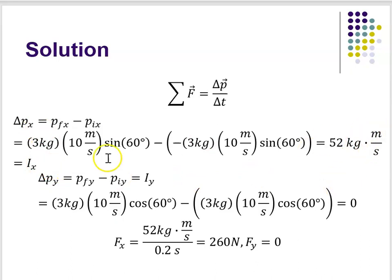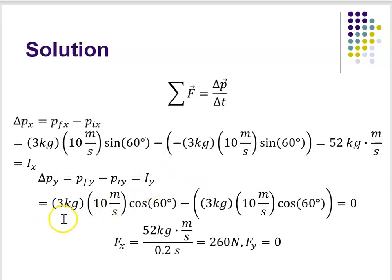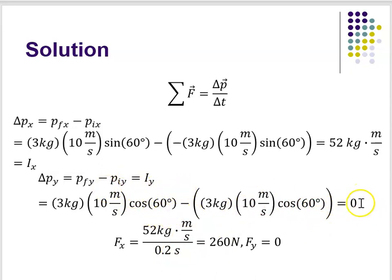Now the change in momentum in the y direction is p final y minus p initial y, and that equals my impulse in the y direction. That's three kilograms times 10 meters per second times the cosine of 60, minus three kilograms times 10 meters per second times the cosine of 60. That gives me zero. In other words, since the y component of my momentum doesn't change, I've got no net impulse in the y direction.